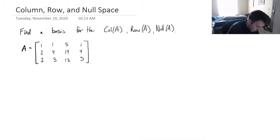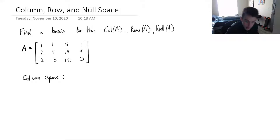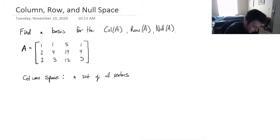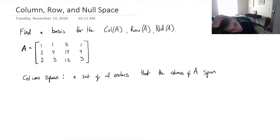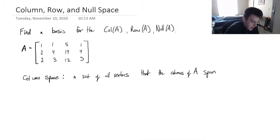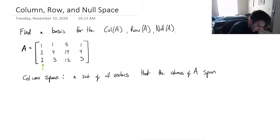So, what is a column space? Column space is the set of all vectors that the columns of A span. Remember what span means — it means we're taking all possible linear combinations of these columns, and the set of every single possible linear combination of these columns, that's just the column space. It's just the span of the columns. These vertical columns here are columns; rows go horizontally.